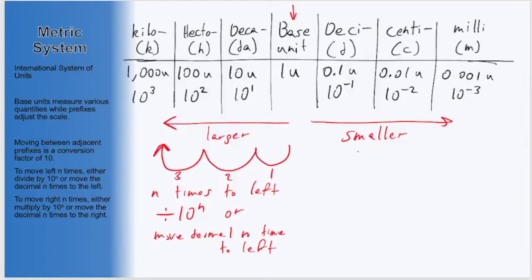Or equivalently, we can simply move the decimal in our number n times to the left. On the other hand, if we are going towards our smaller units from our base unit, such as to milli, from the base unit to milli would be three movements to the right.